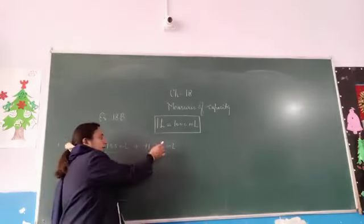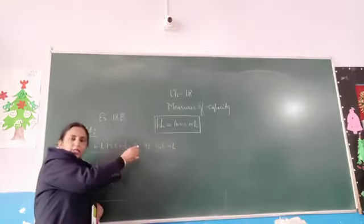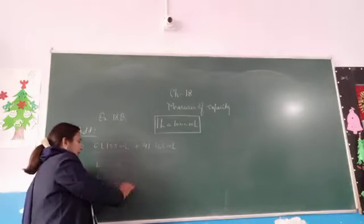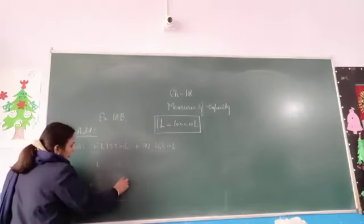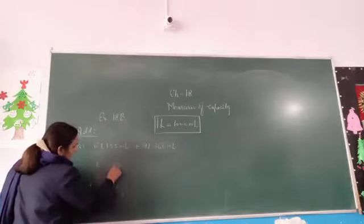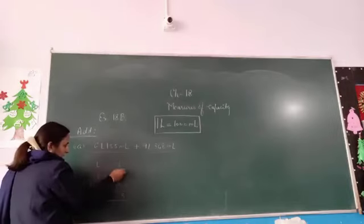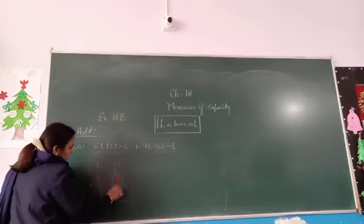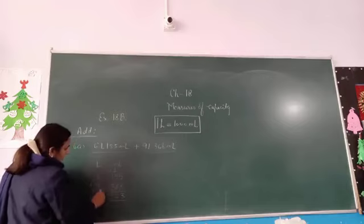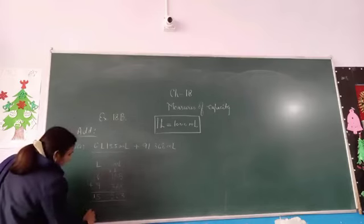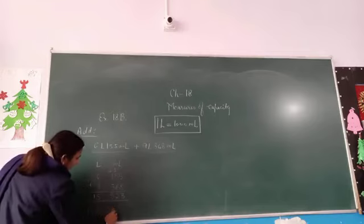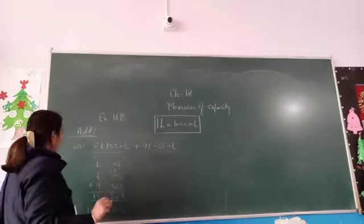If you add the numbers directly there can be mistakes, so it is better to make the sum in column form first. Now we can add: 5 and 8 is 13, write 3, take 1 as carryover. 5 and 6 and 1 is 12, write 2, take 1 as carryover. Continue adding through the columns. The answer is 15 litre 523 millilitre. So in this way you can solve all the sums.